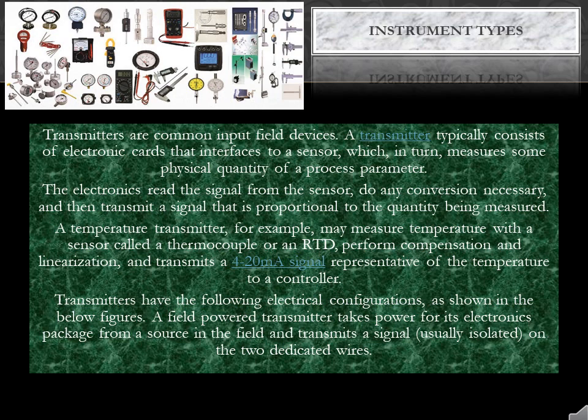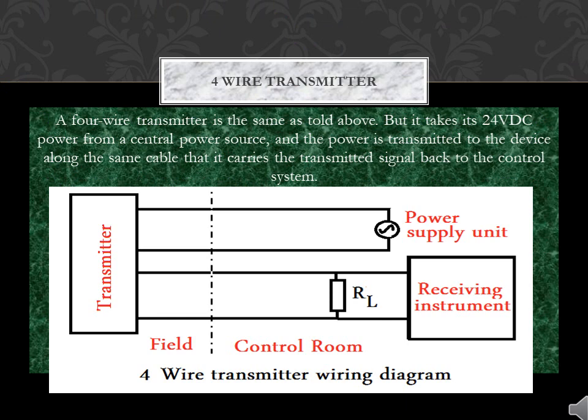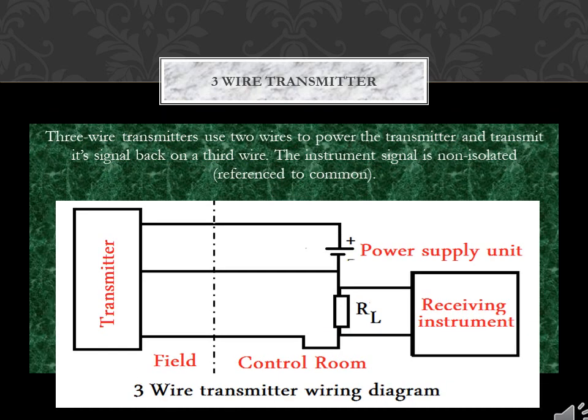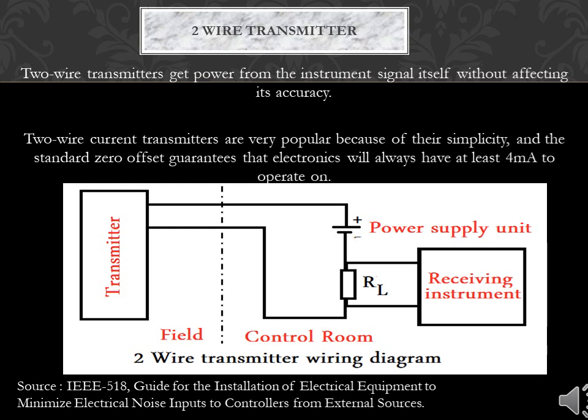Transmitters have the following electrical configurations. A field-powered transmitter takes power for its electronics package from a source in the field and transmits a signal, usually isolated, on two dedicated wires. A 4-wire transmitter takes its 24 VDC power from a central power source, and power is transmitted to the device along the same cable that carries the transmitted signal back to the control system. A 3-wire transmitter uses two wires to power the transmitter and transmits its signal back on a third wire; the instrument signal is non-isolated, referenced to common. A 2-wire transmitter gets power from the instrument signal itself without affecting accuracy. 2-wire current transmitters are popular because of their simplicity, and the standard zero-offset guarantees the electronics always have at least 4 mA to operate on.